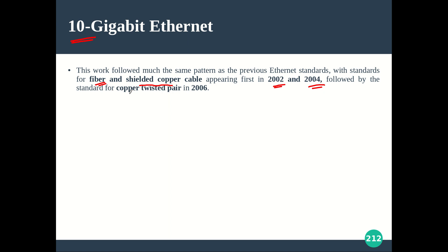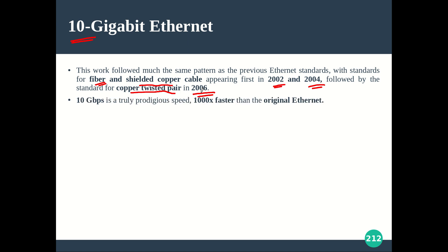Next came the version running over copper twisted pair. When it is able to work over twisted pair, it is of course an inexpensive option. Fiber optic gives great performance but is expensive, so achieving 10 gigabits per second over copper twisted pair is a very good achievement, and that happened in 2006. This speed is truly impressive — about a thousand times faster than the original Ethernet, which was just 10 megabits per second.